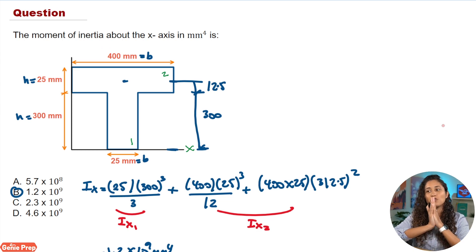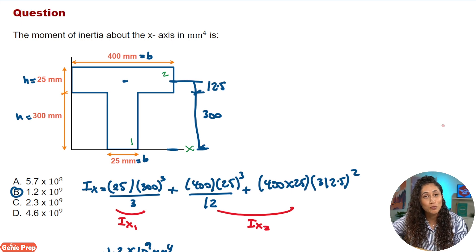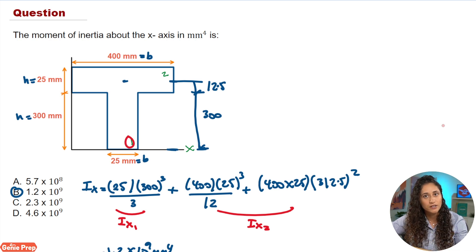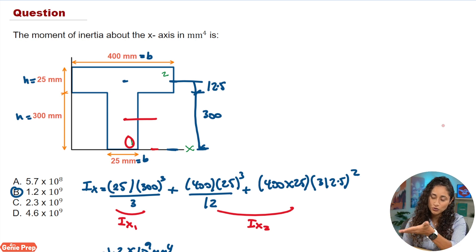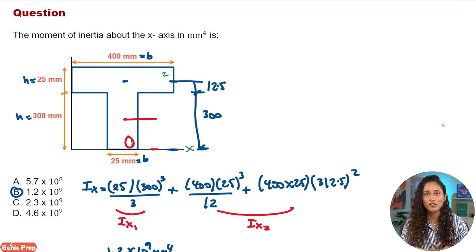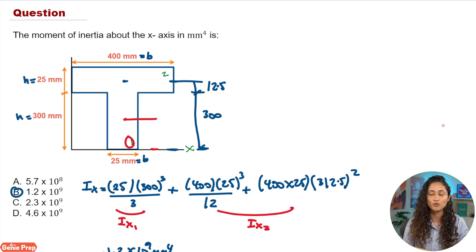Another thing to add: for shape one, there's actually another way to solve it using the parallel axis theorem. The equation would be IXC equals BH³/12 plus the area of shape one times DY squared. Here DY would be the distance from the X axis to the centroid of shape one, which is 300 divided by two, equal to 150. I used IX for shape one because that's the fastest method, and on the FE exam time management is critical — knowing the fastest path to the answer will save you a lot of time.